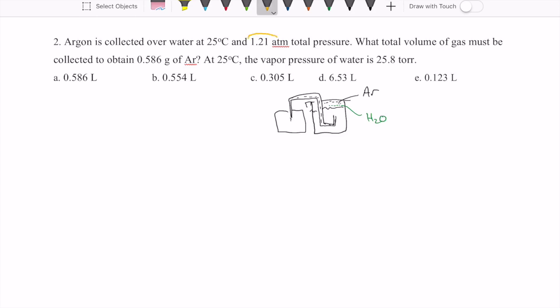The pressure that's measured right here, the 1.21 atmosphere, is composed of both argon and water. If we want to figure out the argon alone, we have to subtract out the water first. And after we do that, then that would allow us to use our ideal gas equation, PV equals nRT, to figure out just the volume of the argon.